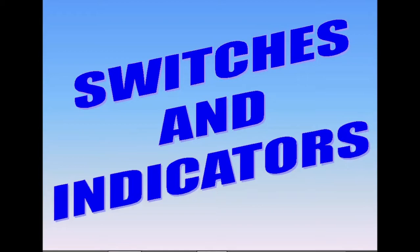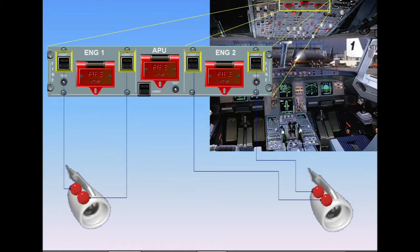Each engine is equipped with two fire bottles. The discharge of the bottles is controlled by an associated push-button switch. The push-button switches are located on the fire panel on the overhead panel.